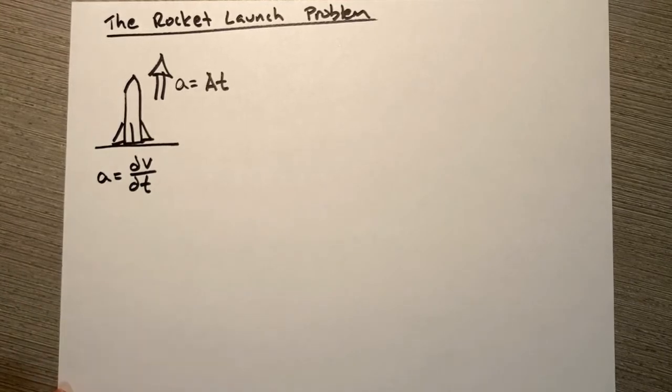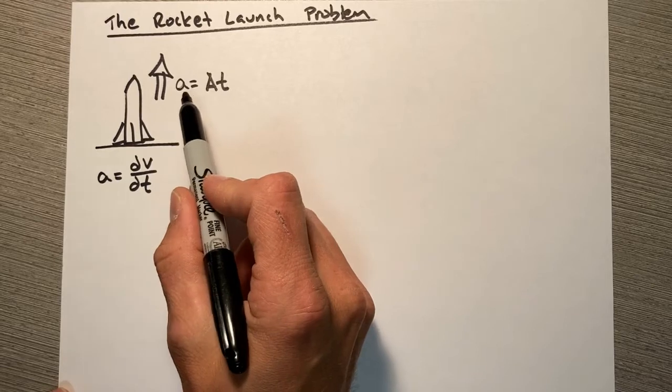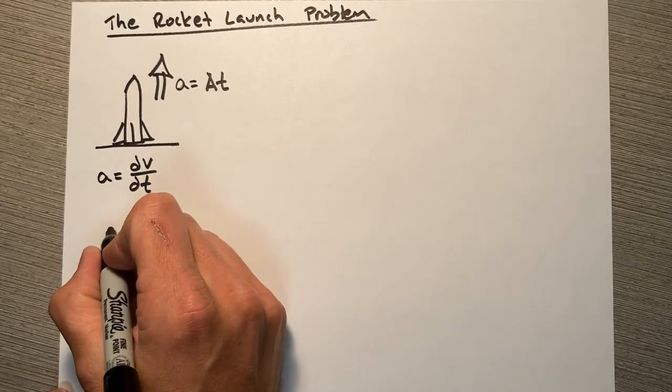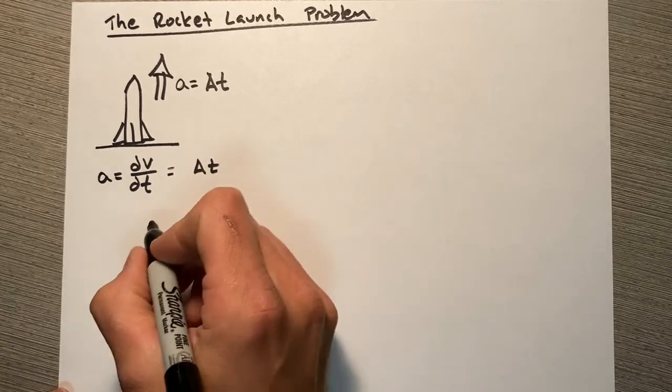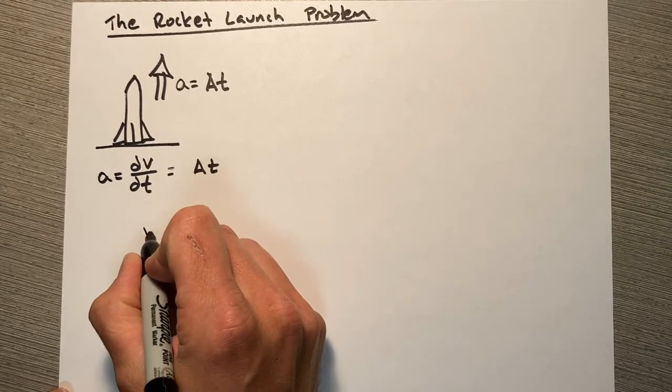So here I'm going to have dv over dt is equal to At, so I want to integrate this function to get v.